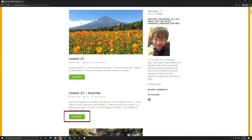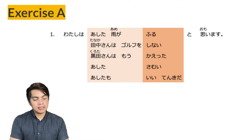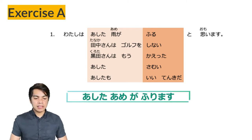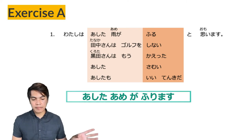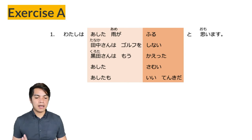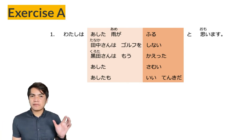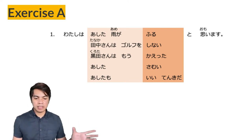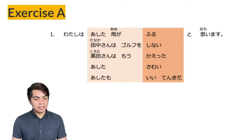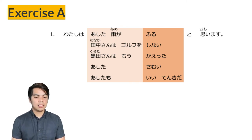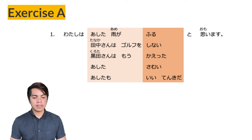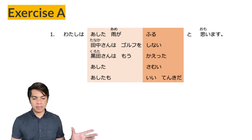Lesson 21, Exercise A. I will read the sentences and please repeat after me. Let's start with number one. 'Watashi wa ashita ame ga furu to omoimasu.' From the sentence ashita ame ga furimasu — it will rain tomorrow — change the verb furimasu to the dictionary form: furu. Then to omoimasu. I think it will rain tomorrow. Next: 'Tanaka-san wa gorufu wo shinai to omoimasu.' From Tanaka-san wa gorufu wo shimasen — Mr. Tanaka does not play golf — the plain form for shimasen is shinai. Shinai to omoimasu.